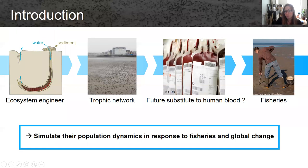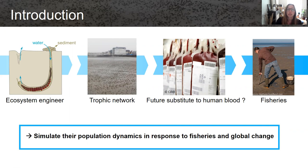From another perspective, they might also be important to humans because their blood might constitute a future substitute to human blood. The reason we studied them at the beginning is because those species are fished by recreational anglers to be used as bait, and local managers wanted to know if there was a need to manage those species and to control the number of individuals fished, which impacted local populations.